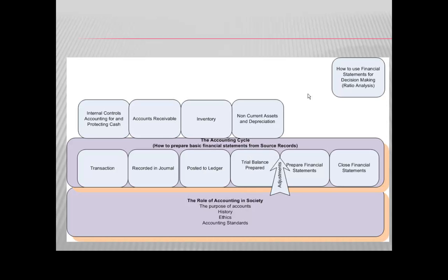We have a transaction and then we record that information in a journal. Then we categorize that information by posting it to the ledger — in this case, the general ledger. That information is then summarized in the trial balance before reporting the information in the financial statements.